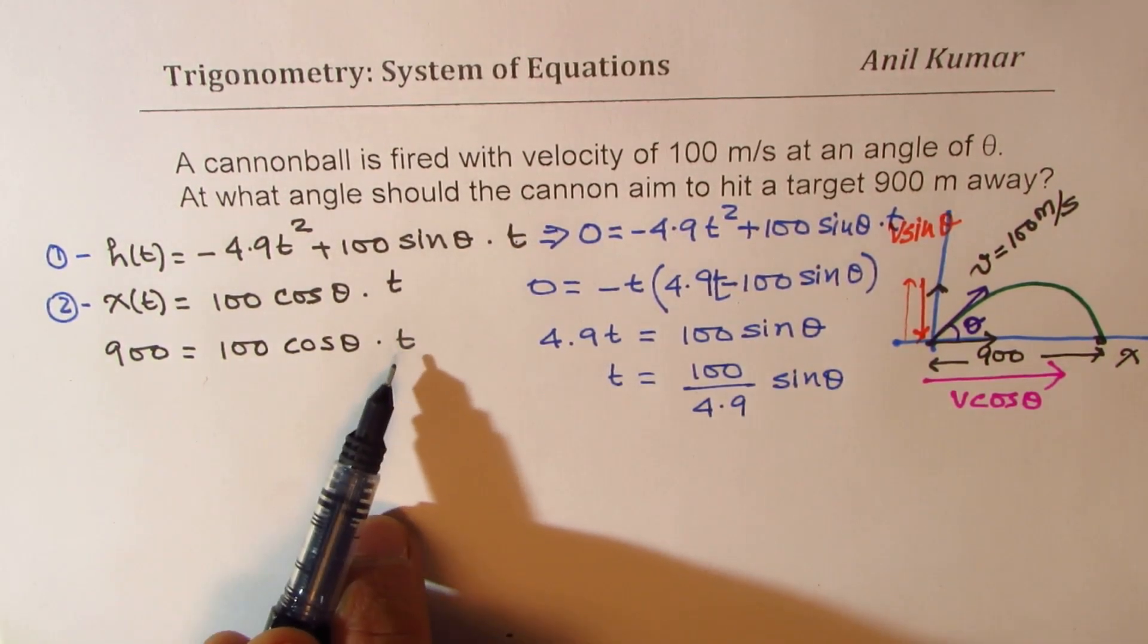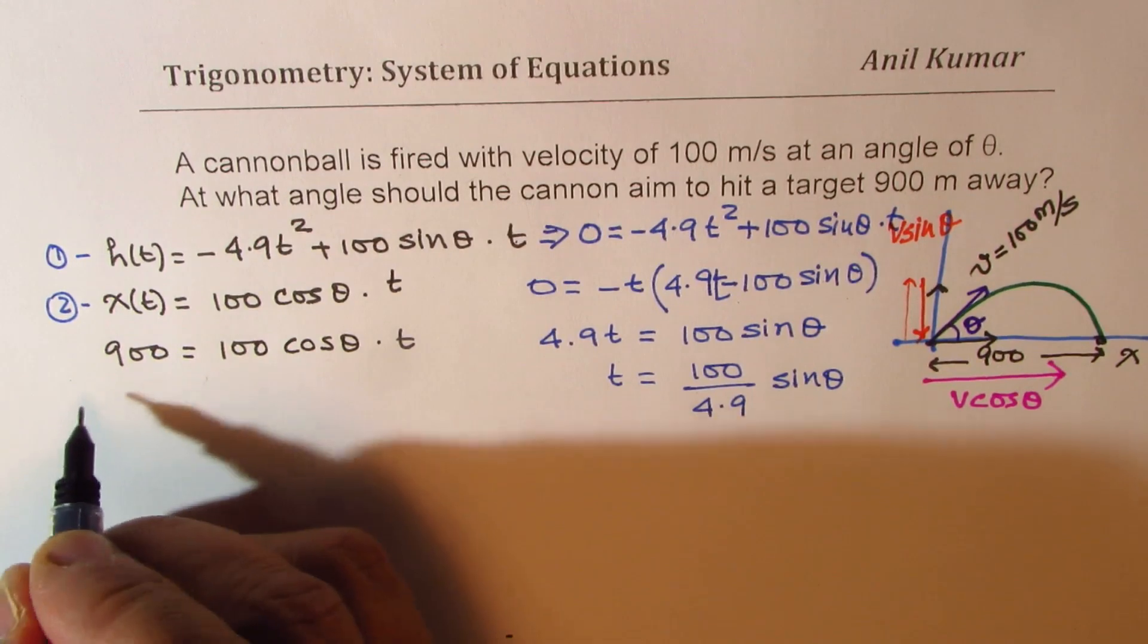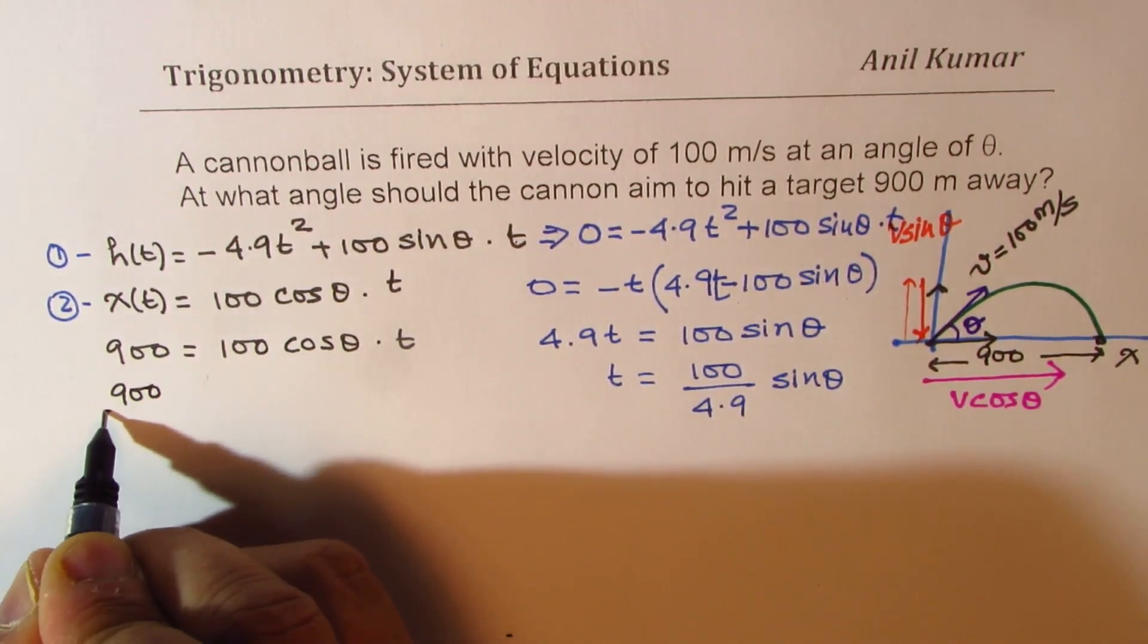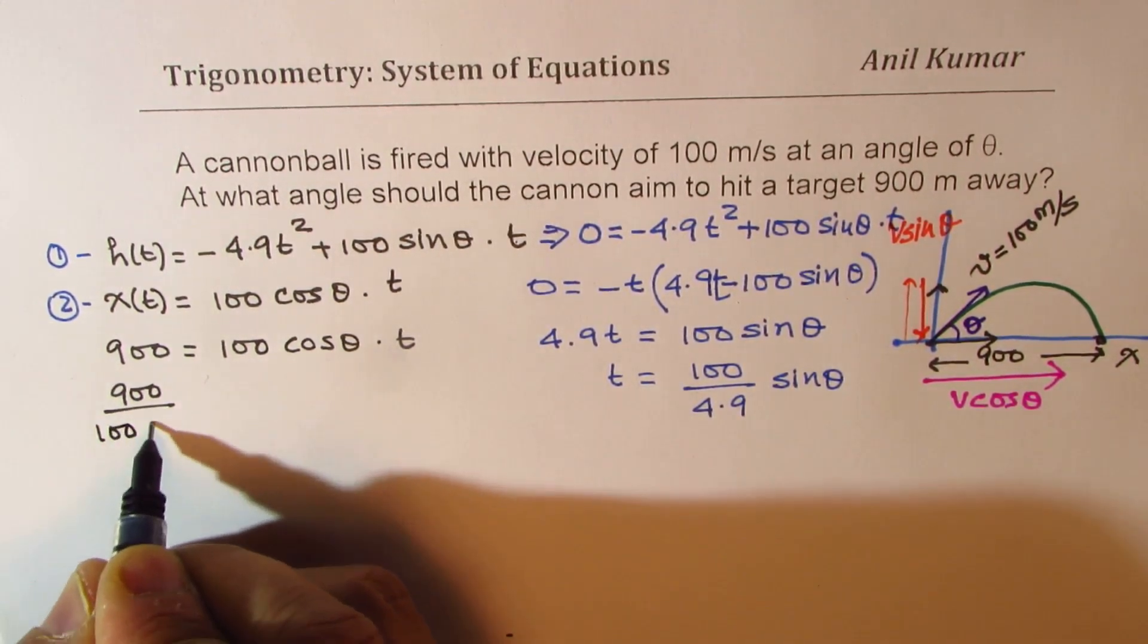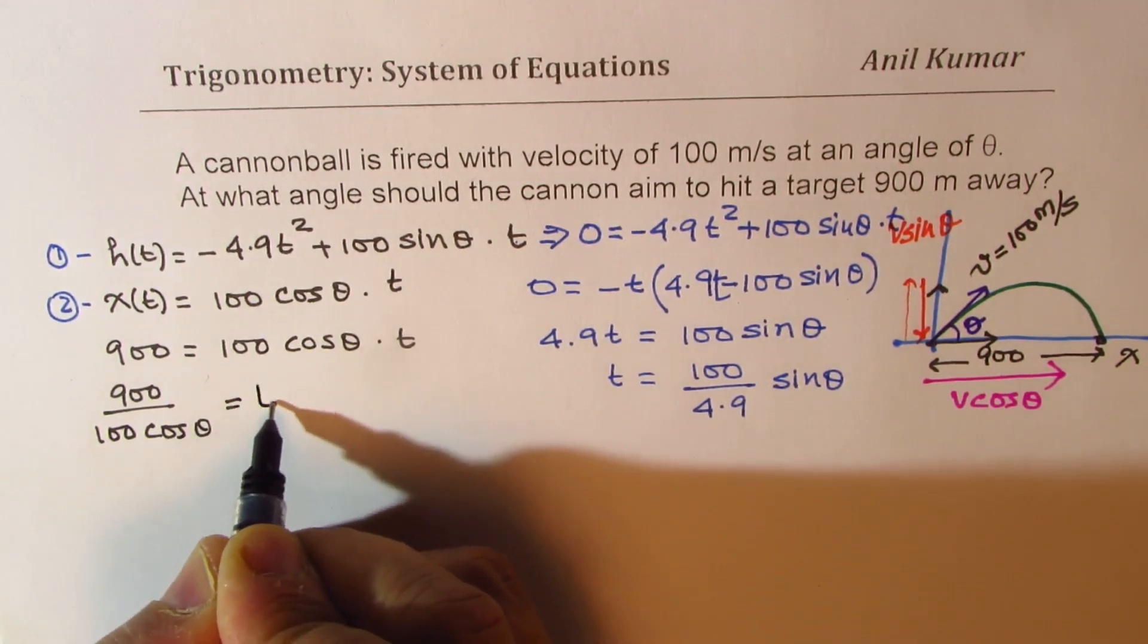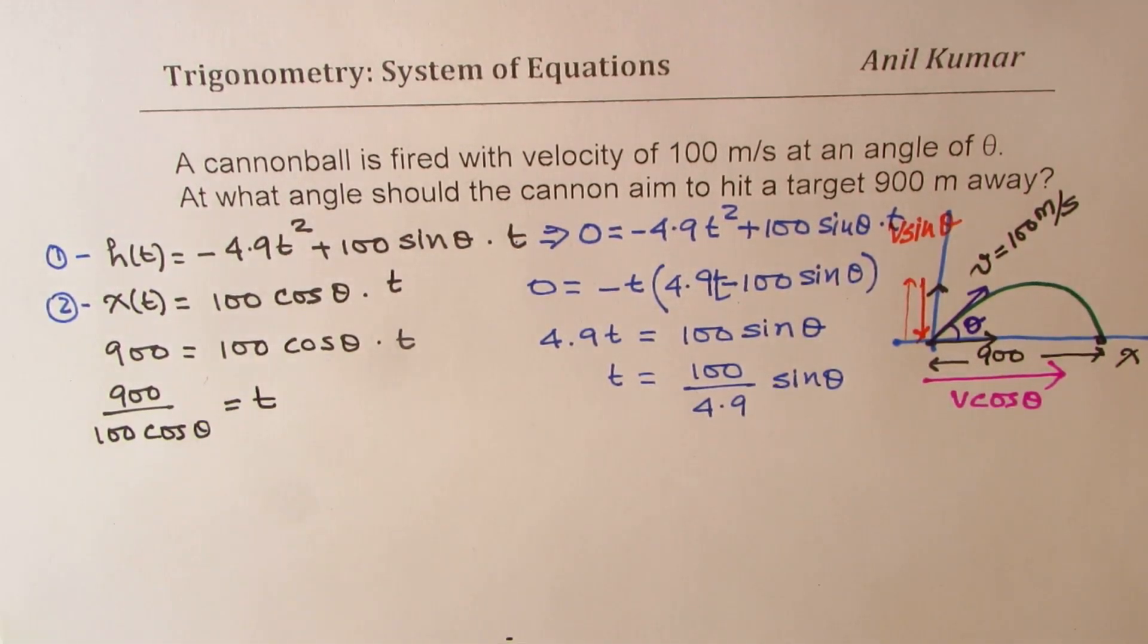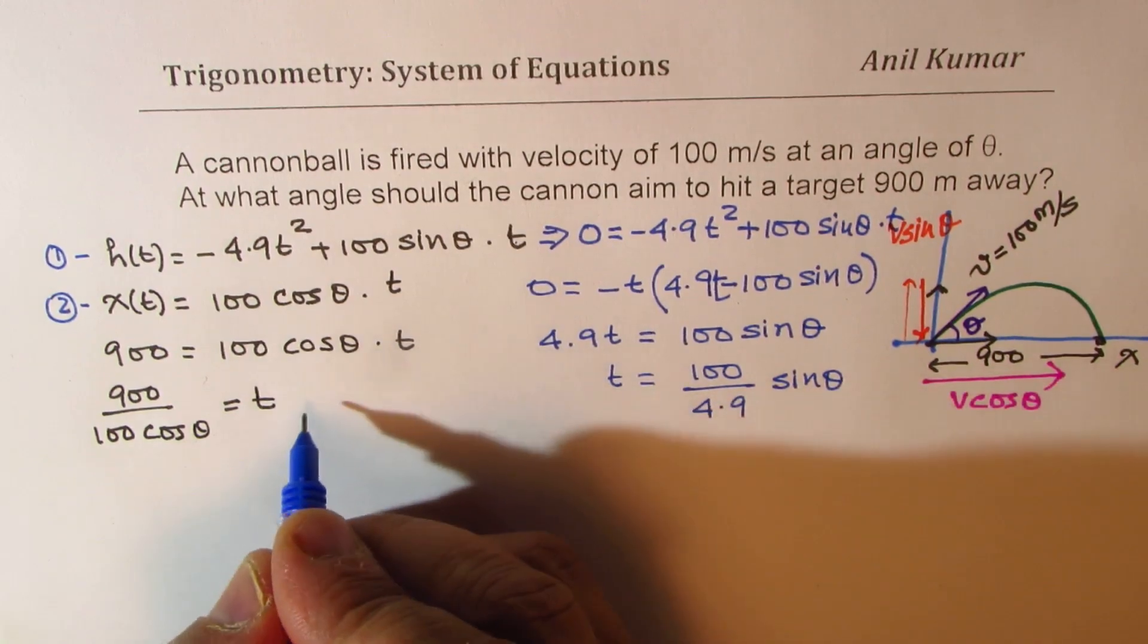So from here, we get the value of t as equal to what? We get 900 divided by 100 cos theta as equal to t, right? So let us call these equations as our equation number 3 and 4.